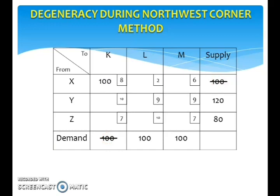Thus both supply and demand are satisfied. Now move to the next square. We cannot move to the right because the supply is finished and we cannot move down because the demand is satisfied. So move diagonally to this square. Look at the supply value in the corresponding row and the demand value in the corresponding column and choose the lowest value. Here the supply value is 120 and the demand value is 100, so write 100 here.